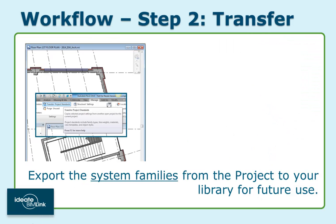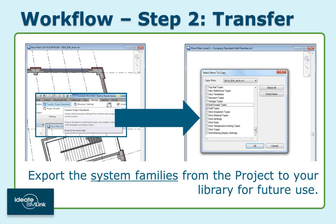Having updated more than 200 types within this project, we'll want to complete our process with two more steps. The second step would be to transfer all of our system data to a template file or a seed file for future use. This can be done with Revit's Transfer Project Standards tool, which is found on the Manage tab.